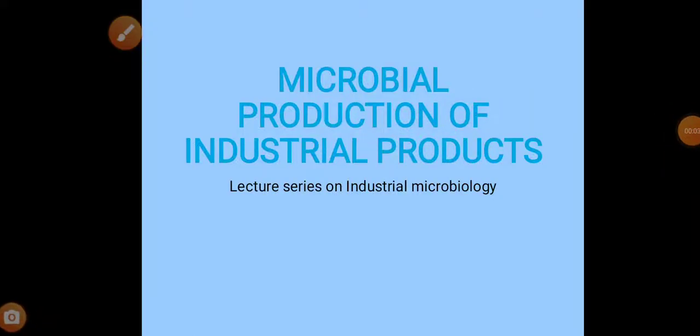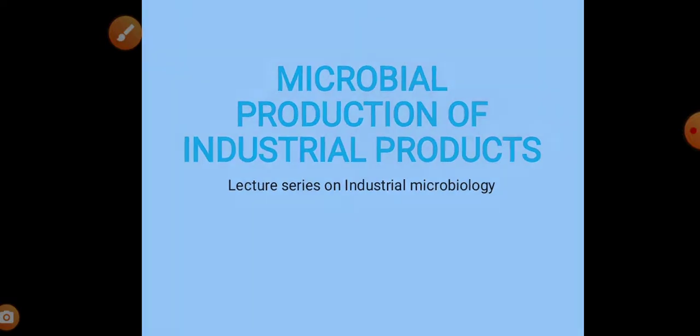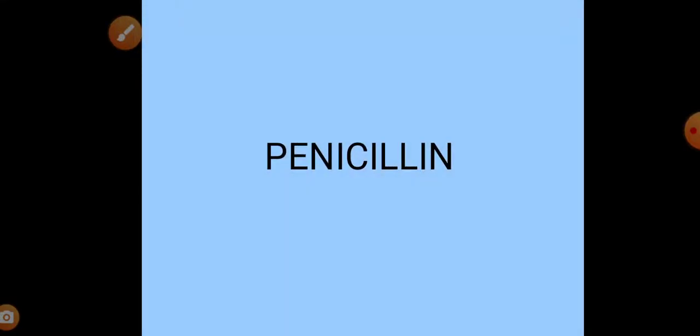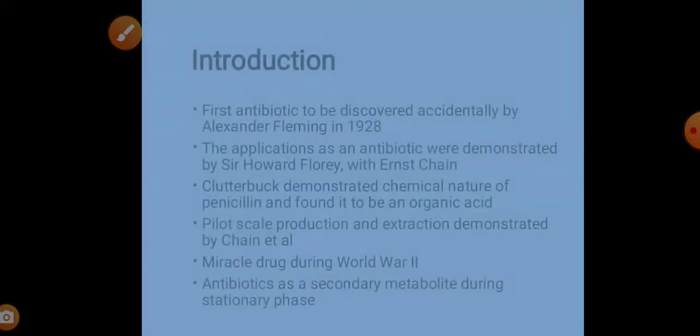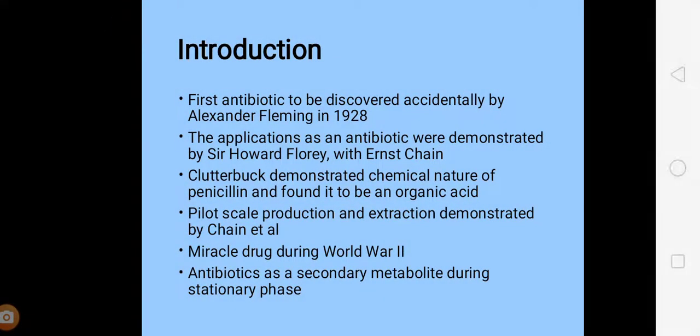Welcome back to another video tutorial from our lecture series on industrial microbiology. So far we have discussed the industrial production of citric acid, ethanol, and butanol. Today the product that we are going to discuss is the production of penicillin. So first let us go through its introduction.